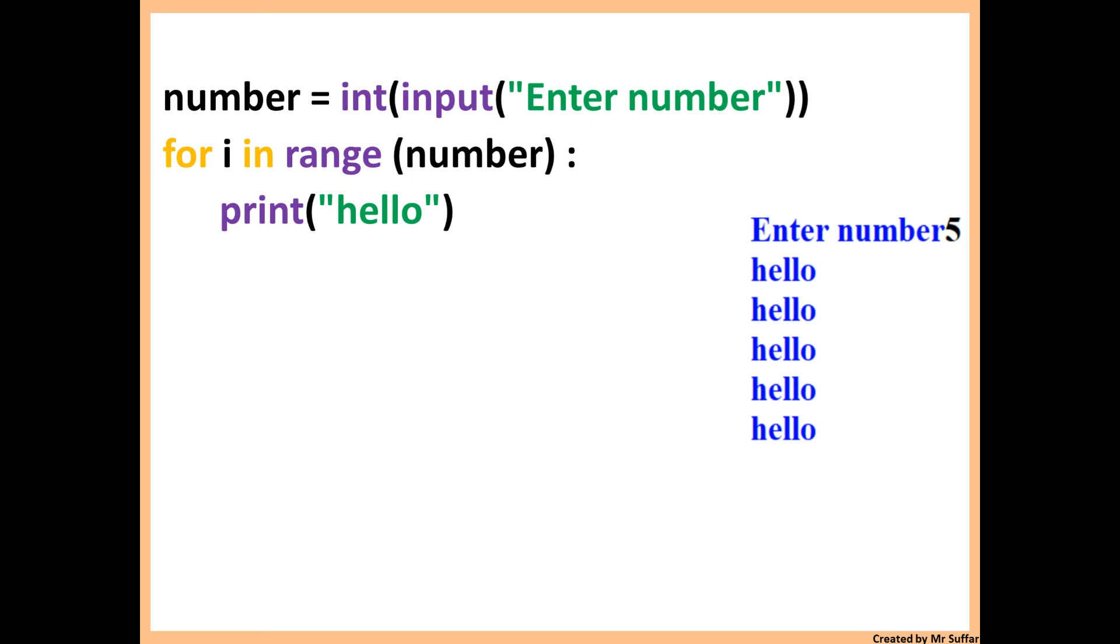Here we have another example. We're asking the user for a number, so we said number equals int, an integer. Number is just a variable input to ask a question, enter a number. Then we said for i in range. The range is number, so because we put number here, this time it will loop depending on the number of times that the user enters. If the user enters 5, this for loop will loop 5 times and everything inside will loop 5 times.